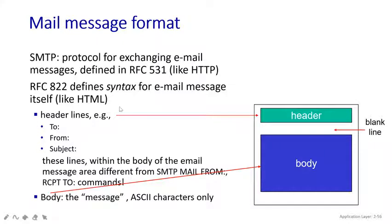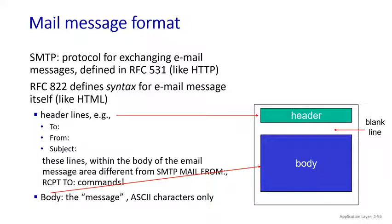Everything has been given with a small code, so by seeing the code we can understand what kind of message we have received. You can see here the diagram showing header and body. In the header lines, you write the To, From, and Subject fields. In the body, you write the message, which has to be in ASCII characters only. Whenever we write any kind of message, it is automatically transferred into ASCII characters and sent towards your server. From server to server, it accepts ASCII characters and again sends it to the user in the user format.